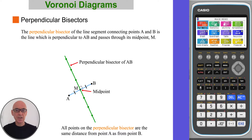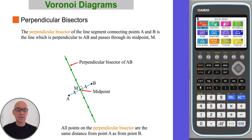The perpendicular bisector of the line segment connecting points A and B is the line which is perpendicular to AB and passes through its midpoint, M. All points on the perpendicular bisector are the same distance from point A as from point B.